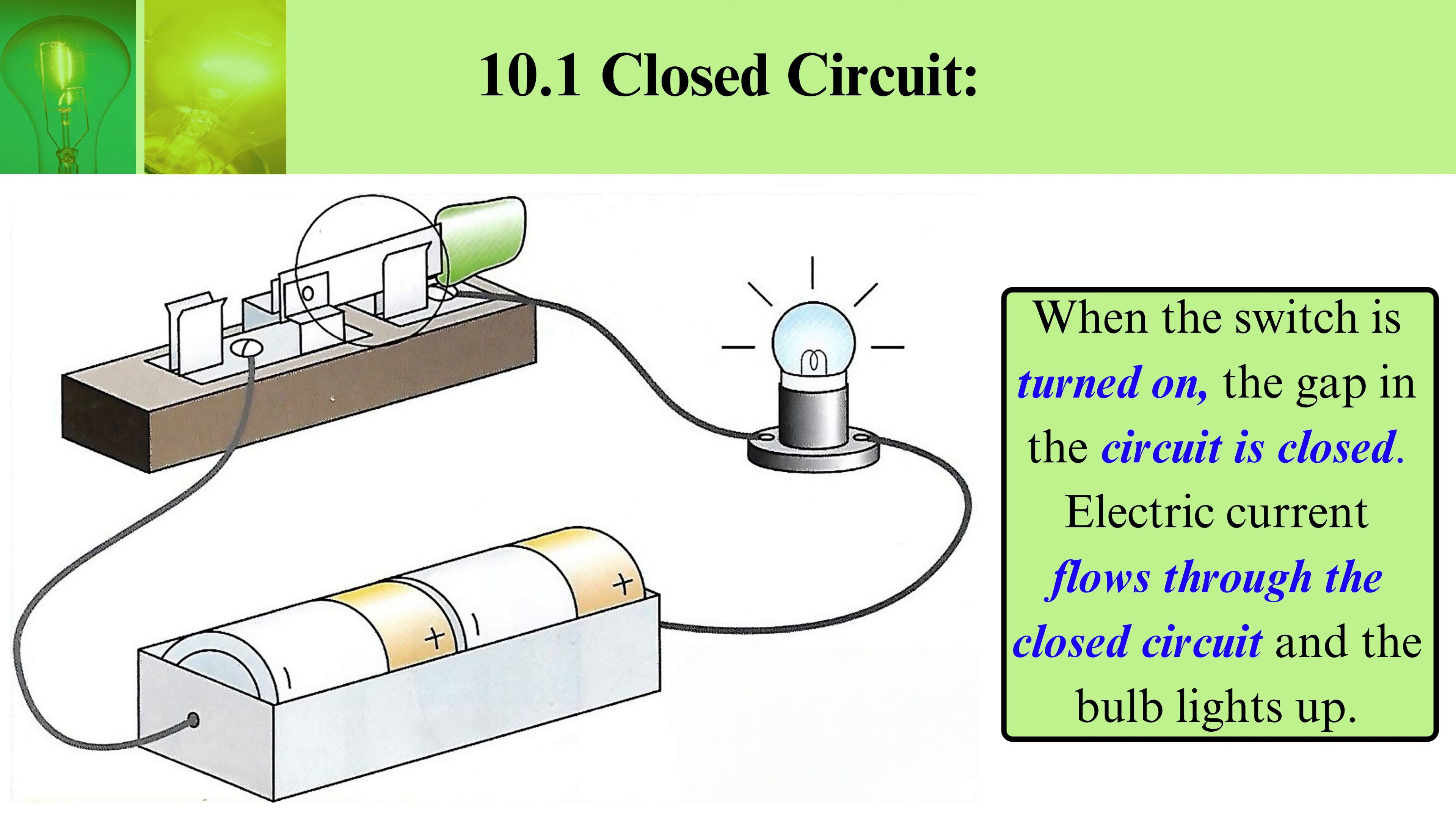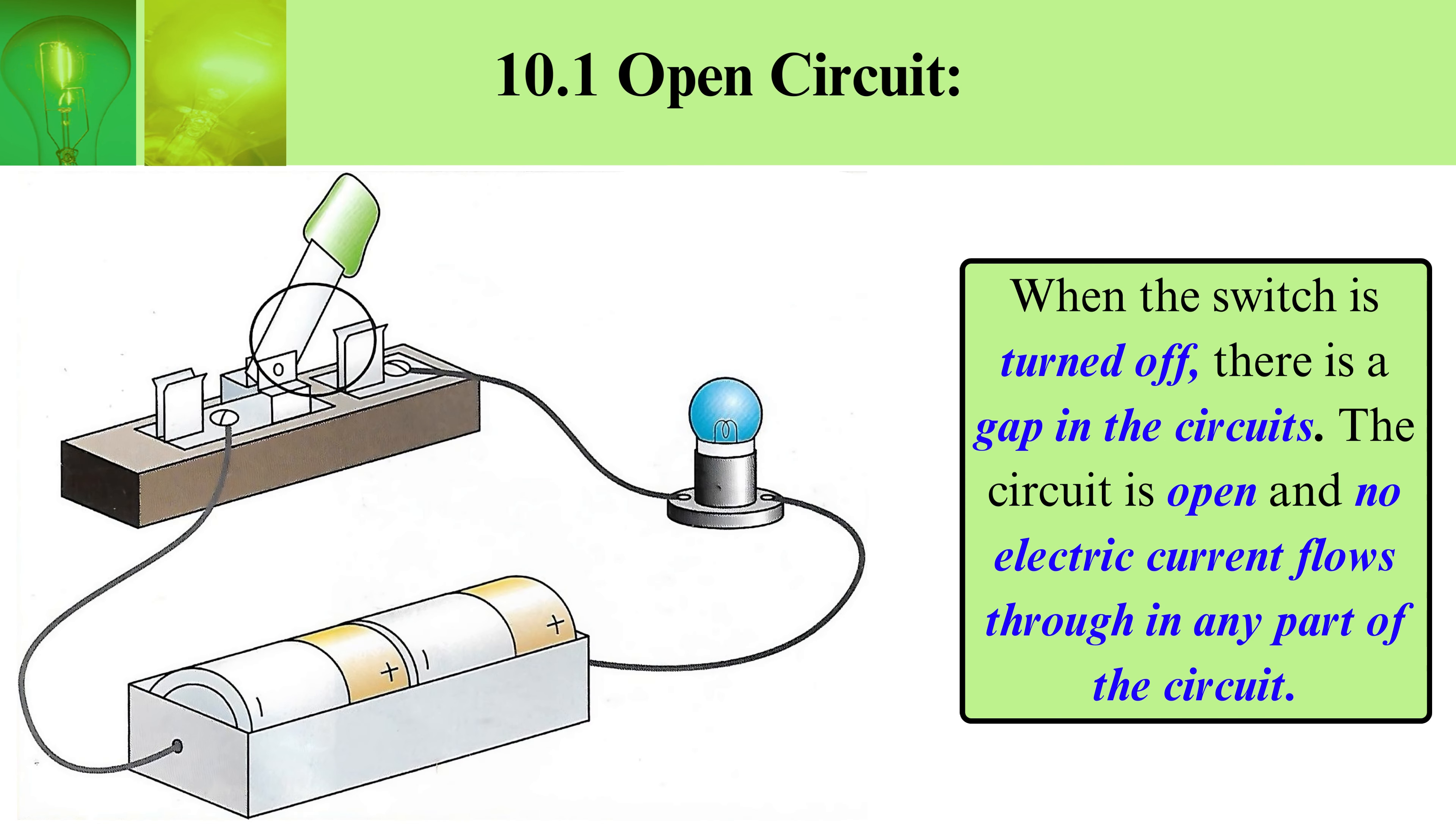Closed circuit: When a switch is turned on, the gap in the circuit is closed. Electric current flows through the closed circuit and the bulb lights up. Open circuit: When the switch is turned off, there is a gap in the circuit. The circuit is open and no electric current flows through any part of the circuit.